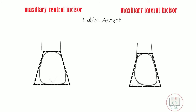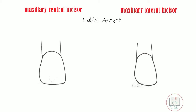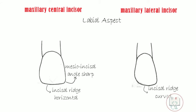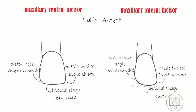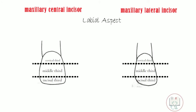Now let us study the morphological differences in detail. From the labial aspect, both incisors are similar in having a crown with a trapezoidal outline form, but the incisal ridge is horizontal in the central incisor whereas it is curved in the lateral incisor. The mesio-incisal angle is sharp in the central incisor but slightly rounded in the lateral incisor, and the disto-incisal angle is rounded in the central but even more rounded in the lateral incisor.